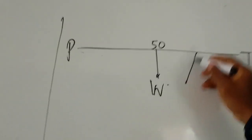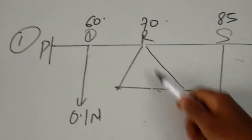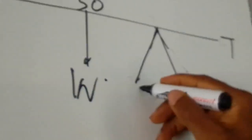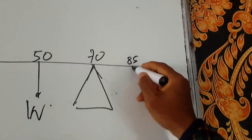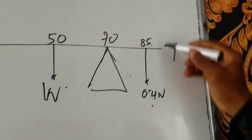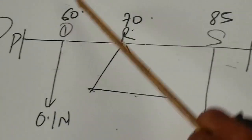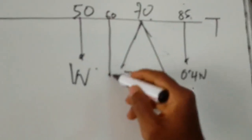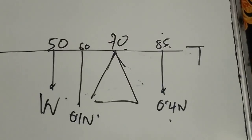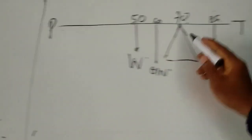The pivot lies after the center of gravity. We now locate the other weights. The weight S is on the 85cm mark, so 0.4 Newton at 85cm. The other weight, 0.1 Newton, is at Q, the 60cm mark, which lies between 50 and 70. Having located all the weights and drawn the complete force diagram, the next thing is to take the perpendicular distance between the pivot and each of the weights.